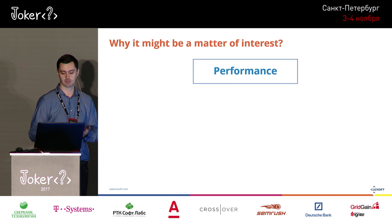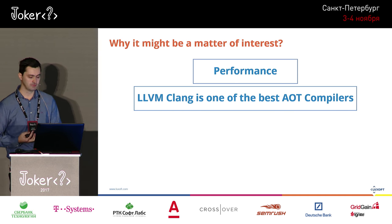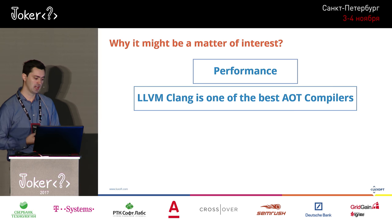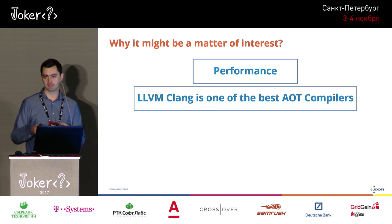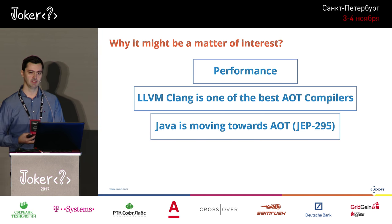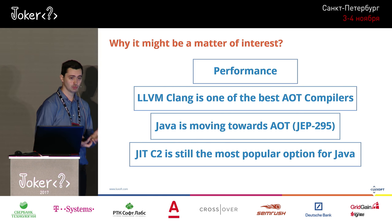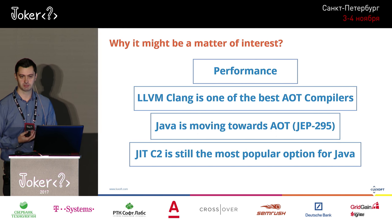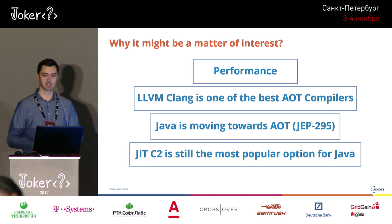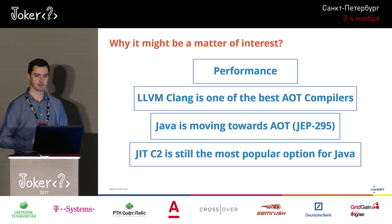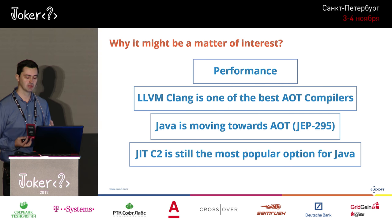This is a matter of interest because of performance. I chose Clang LLVM because it's one of the best AOT compilers — though many production projects still use GCC. Java is also moving towards AOT, though support is limited and experimental. As for C2: it's still the most relevant compiler on the market — most projects use Hotspot C1 and C2 in production. That's why this comparison of optimization types is still relevant.